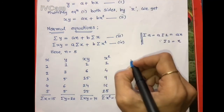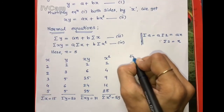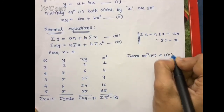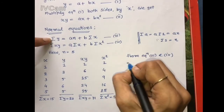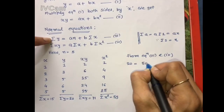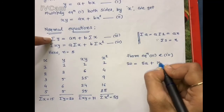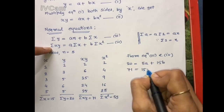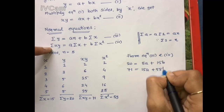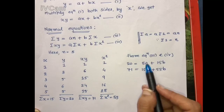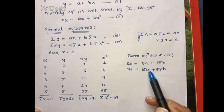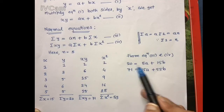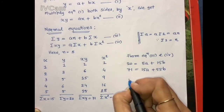Therefore, substituting all values into equations 3 and 4, from equation 3: 20 = 5a + 15b, and from equation 4: 71 = 15a + 55b. To find the values of a and b, we can cancel out either a or b. Cancellation of a is easier — multiply the first equation by 3 and subtract.